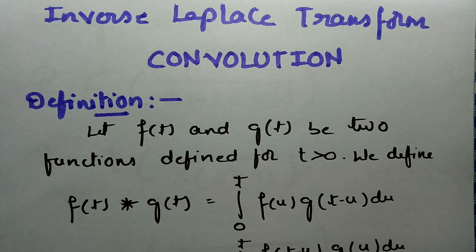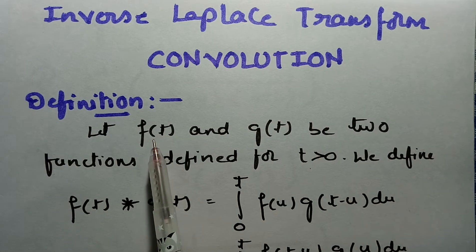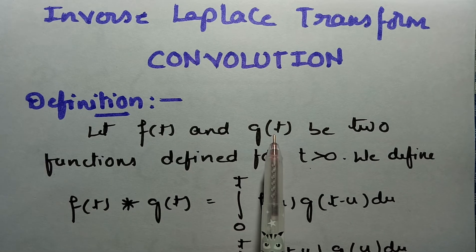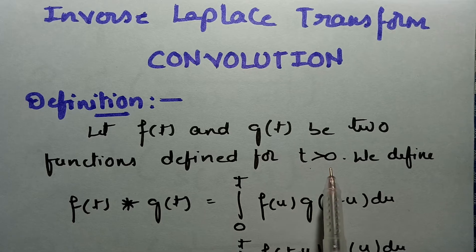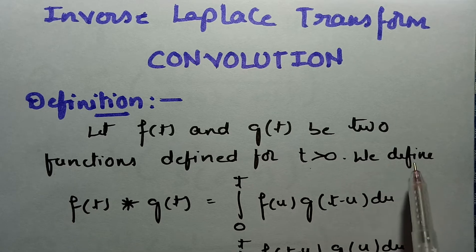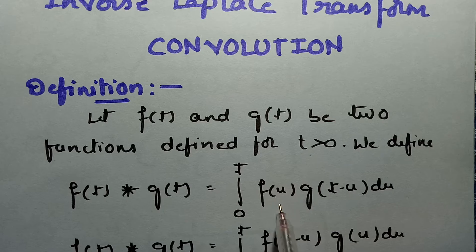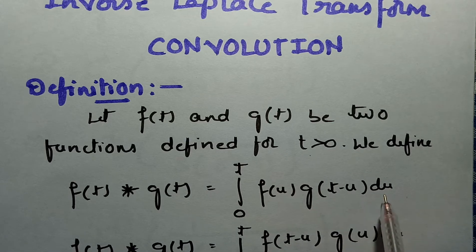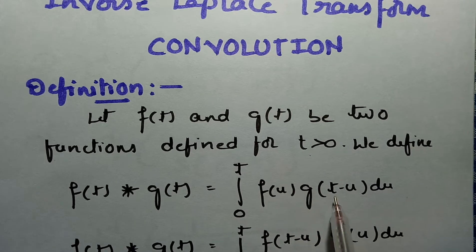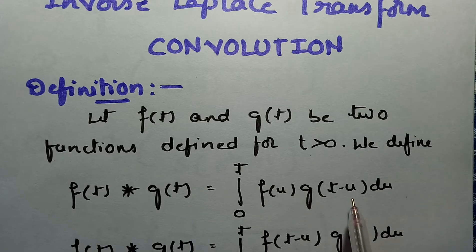Here is the definition. There are two functions f(t) and g(t) defined for t positive. We define f(t)★g(t) as the integral from 0 to t of f(u)·g(t−u) du. So if I take u in the first function, I take t−u in the second function.